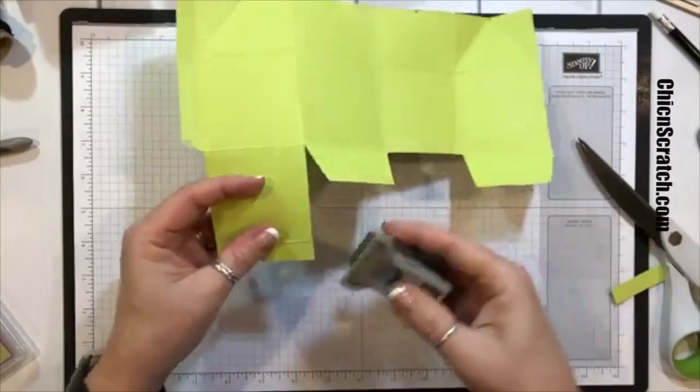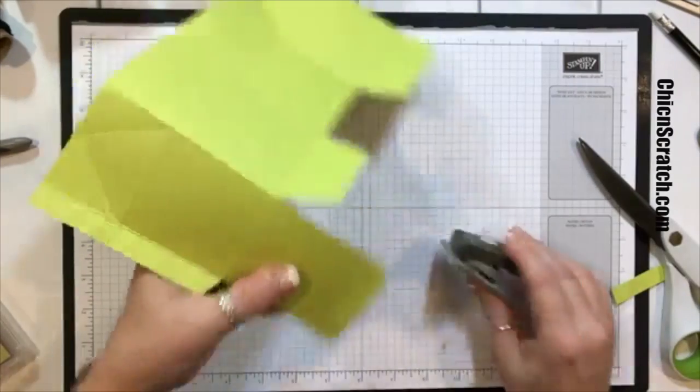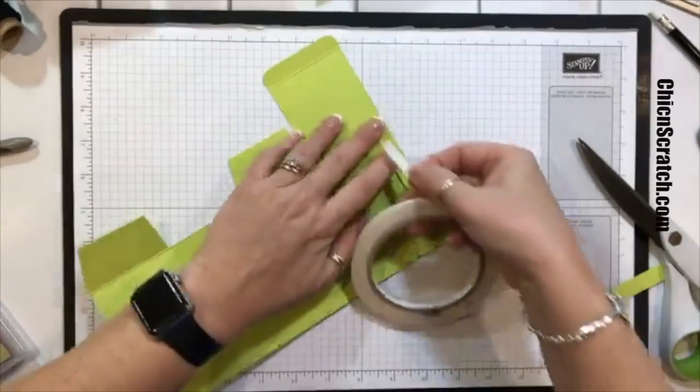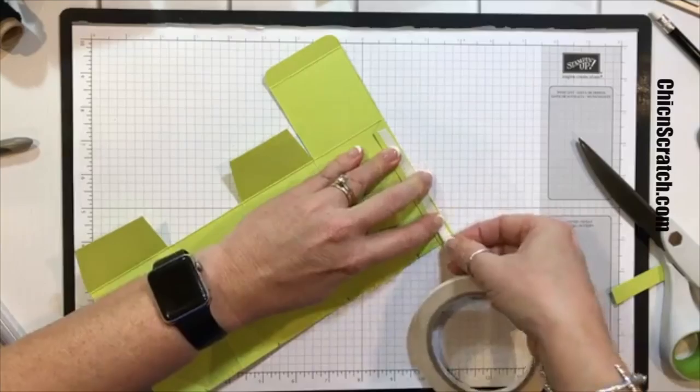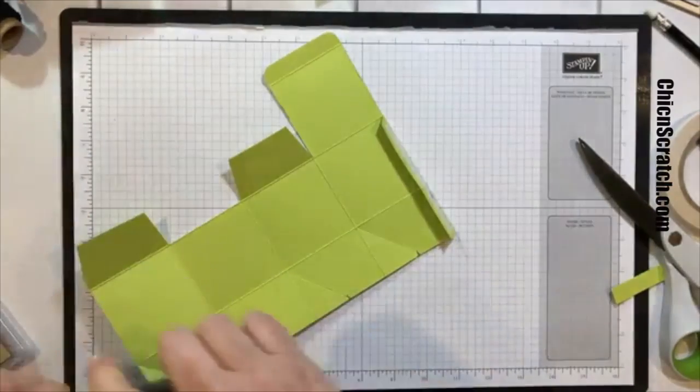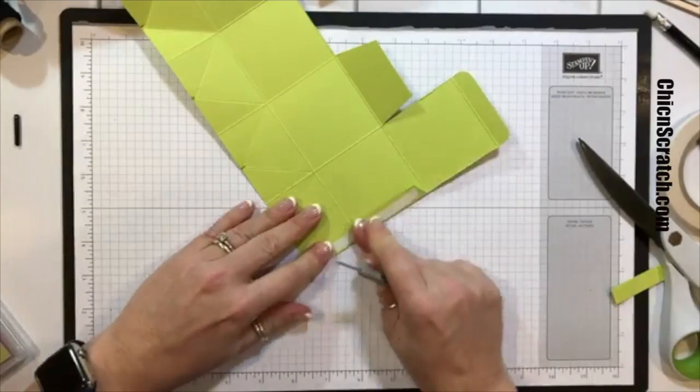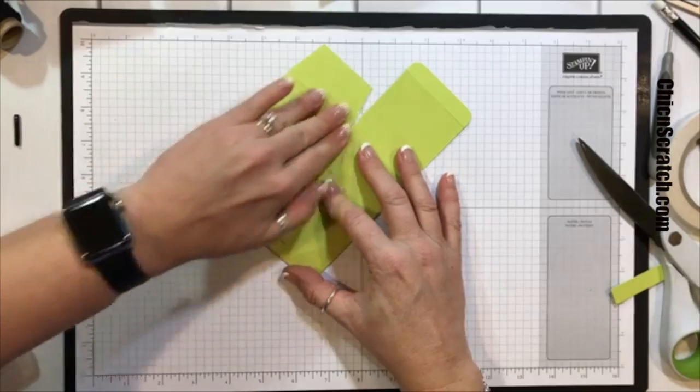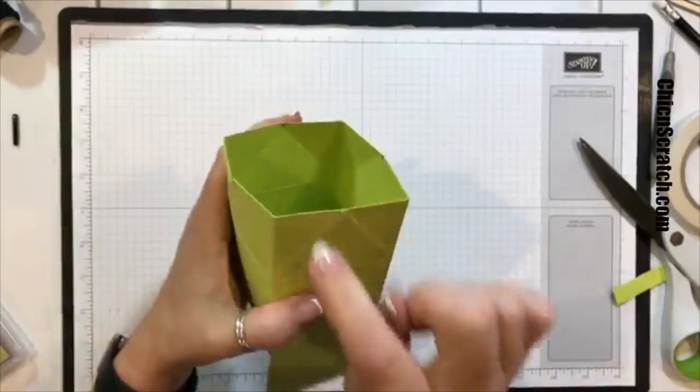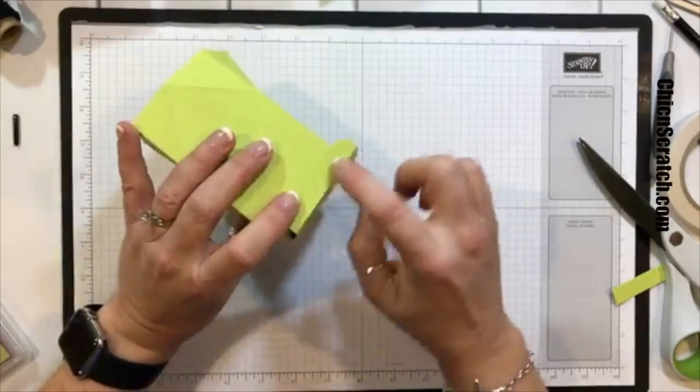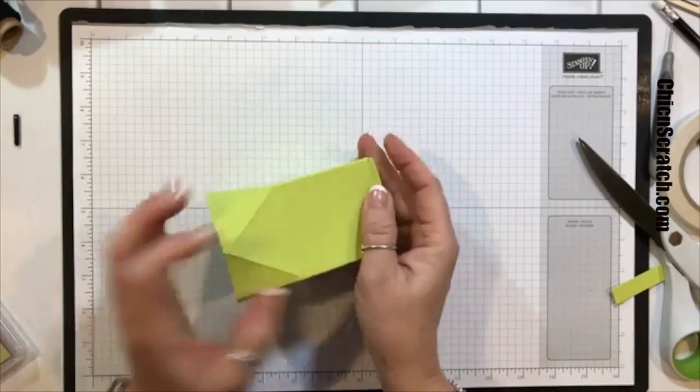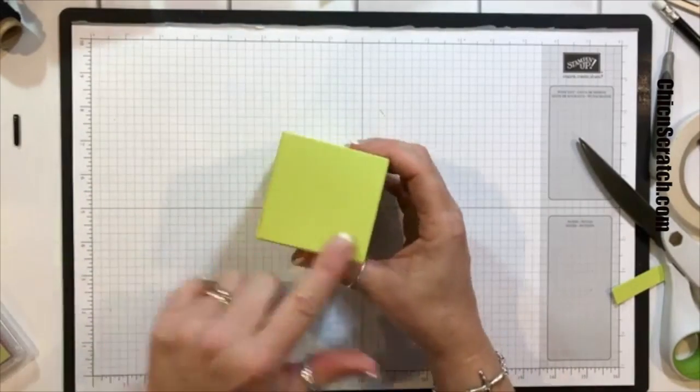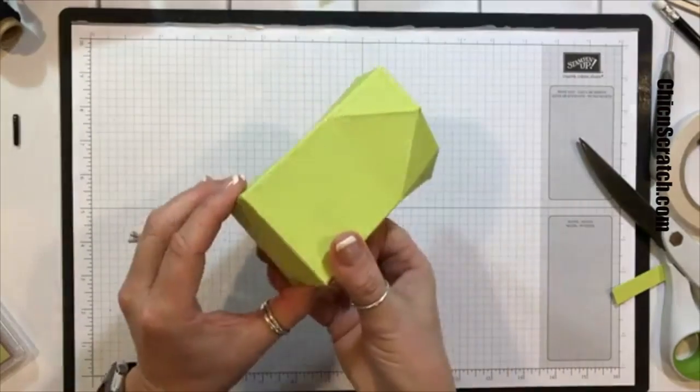This is retired but there's a corner punch in our envelope punch board so you can use that. Now we're going to put our adhesive right here. I'm just going to peel the backing up and fold this over. So this is actually the top of our box, this is the bottom. You could put your adhesive on here and close it if you're going to put something heavy in here.